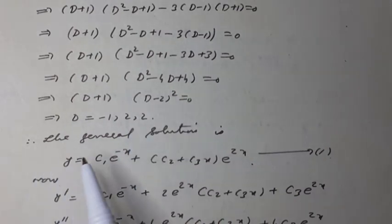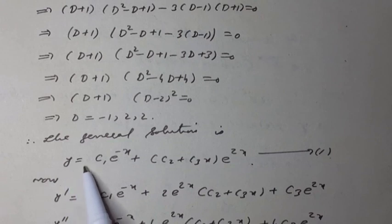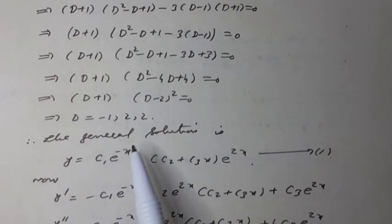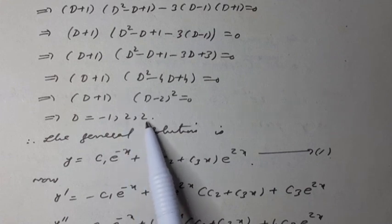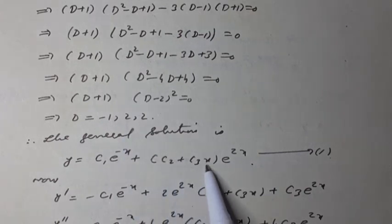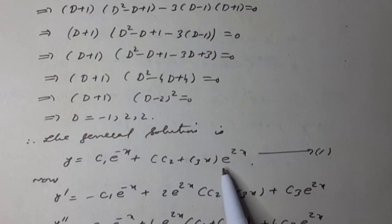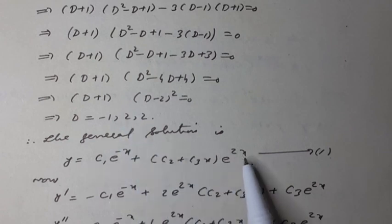Therefore, the general solution can be written as y = c₁e^(-x) plus, for the real repeated roots 2 and 2, (c₂ + c₃x)e^(2x). This is equation 1.